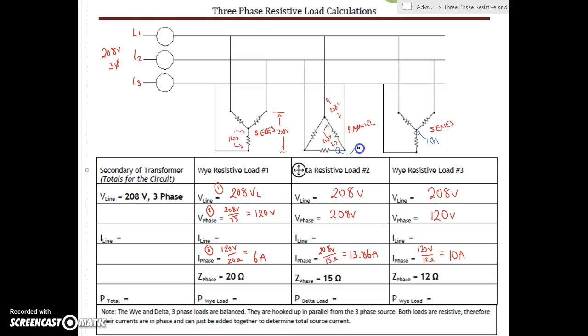Inside this guy on the phase, we've got 13.86 amps. And then inside this circuit on the phase, we've got 6 amps. Now, you can see that with the series circuit, there's only one path for the current to flow. So outside here on the line, we're also going to have 6 amps. Here, again, there's only one path for current to flow. So 10 amps is also going to be on the line. This line current is going to be 10 amps. This line current is going to be 6 amps.